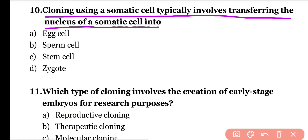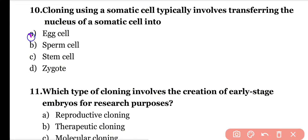Question number ten: Cloning using a somatic cell typically involves transferring the nucleus of a somatic cell into which cell? Options: egg cell, sperm cell, stem cell, zygote. Correct answer is option A. The nucleus of the somatic cell is removed and transferred into an enucleated egg cell.